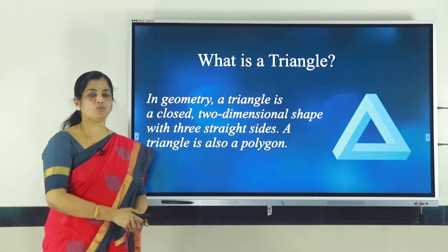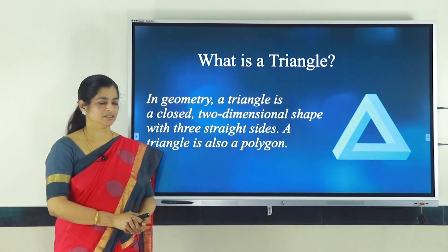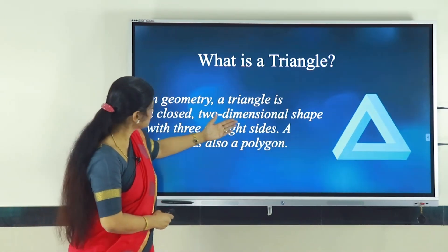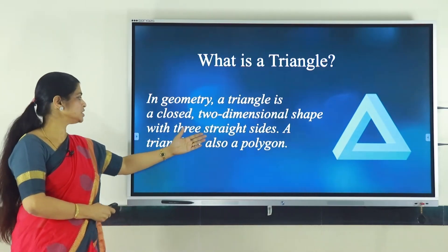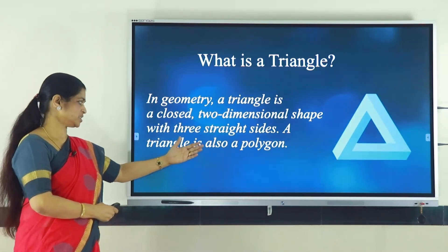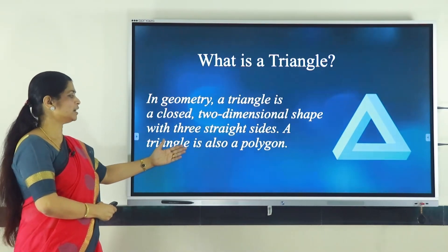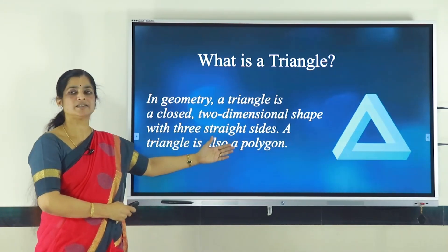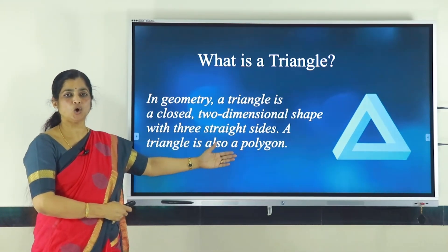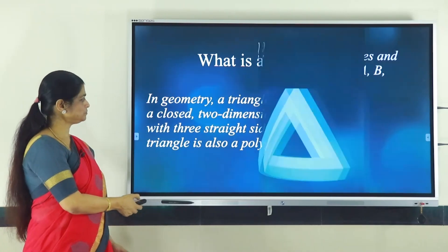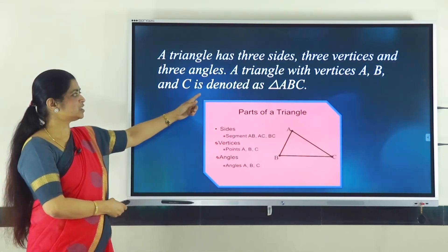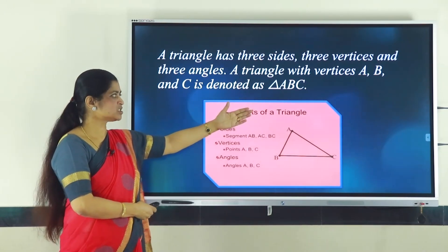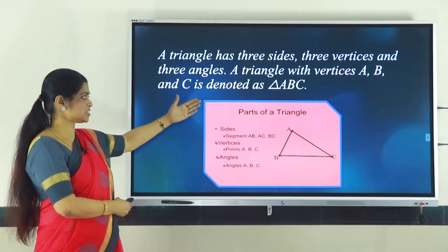Now let us see what is a triangle. A triangle in geometry is a closed two-dimensional shape with three straight sides. A triangle is also a polygon — in other words, it is a simple closed curve. A triangle has three sides, three vertices and three angles.